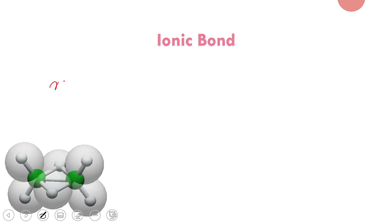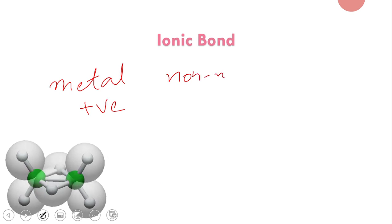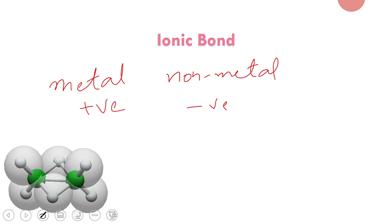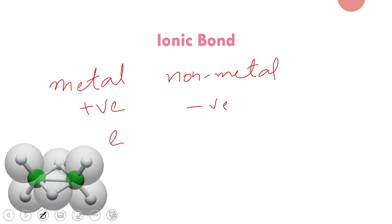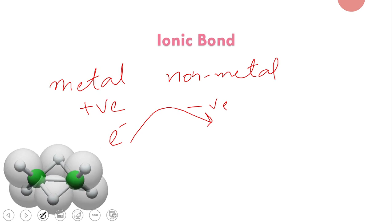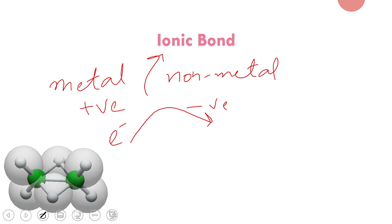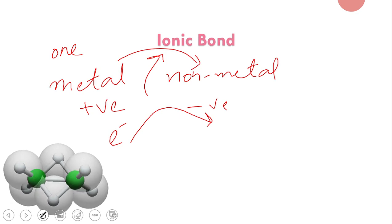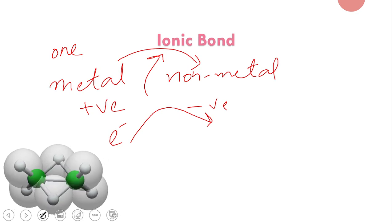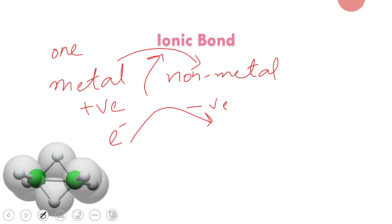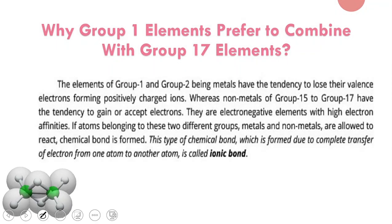Now when metals, which are positively charged, combine with non-metals, which are negatively charged, they combine by transferring electrons. The positive ion loses an electron which the negative ion accepts. This forms an electrostatic bond called an ionic bond. So the complete transfer of an electron from one atom to the other atom — we call this bond an ionic bond.